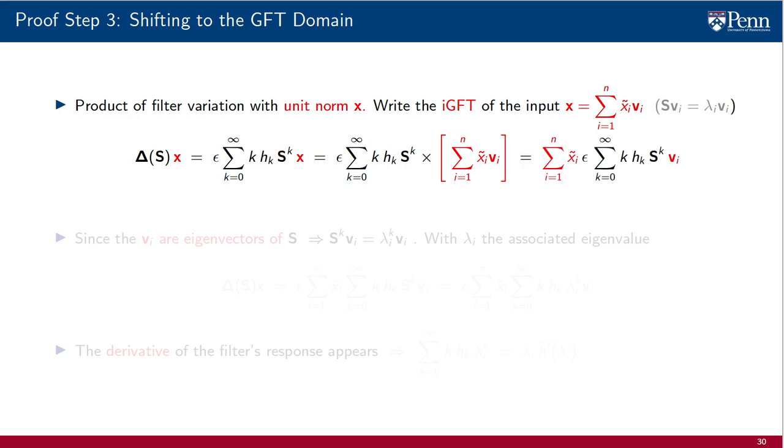Upon substitution of x by its inverse GFT expression, we reorder terms in the resulting sum to facilitate further manipulations. Given that the vectors vᵢ are eigenvectors of the shift operator S, we have that S to the power of k times vᵢ can be simply written as λᵢ to the power of k times vᵢ, with λᵢ representing the eigenvalue of S associated with eigenvector vᵢ.